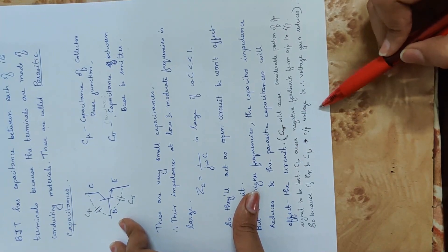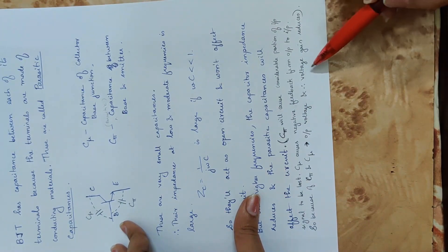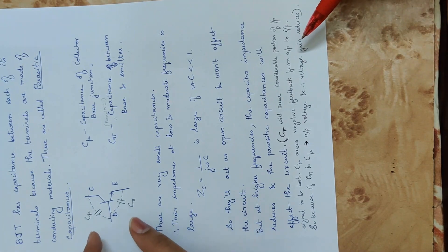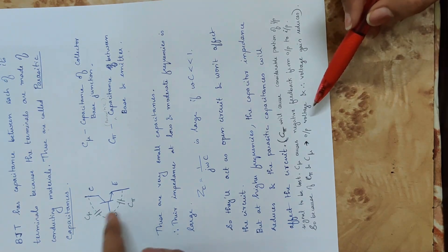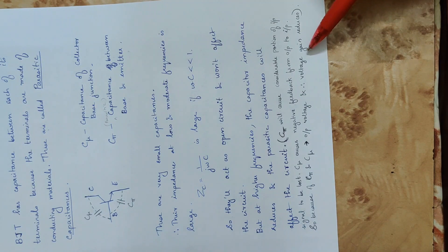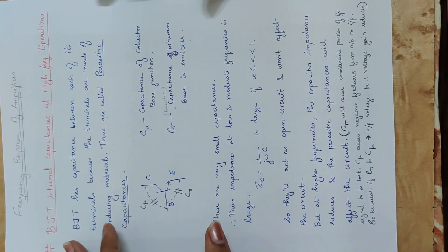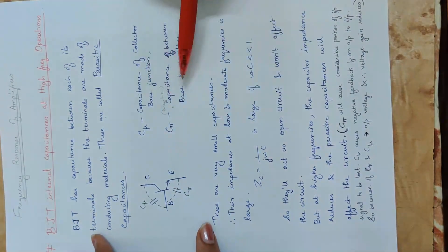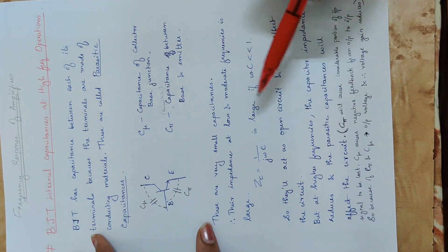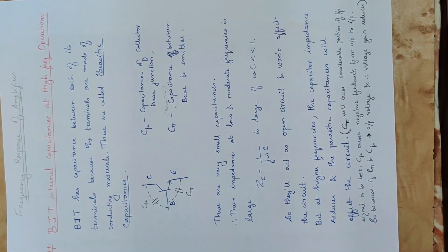The output voltage and voltage gain of the common emitter amplifier are affected by these capacitances. To summarize: BJT internal capacitances at high frequency — at low frequency their effect is neglected, but at high frequency, Cπ and Cμ significantly affect circuit performance.